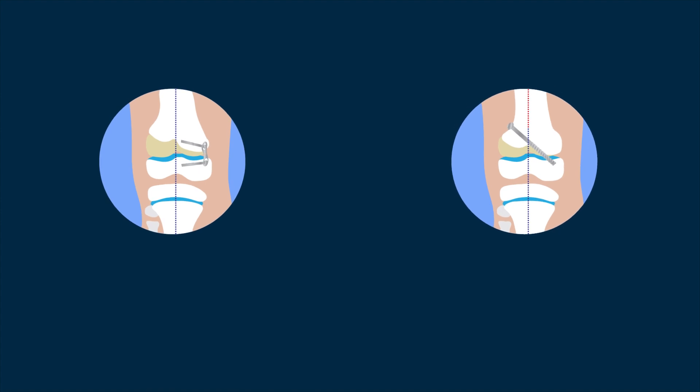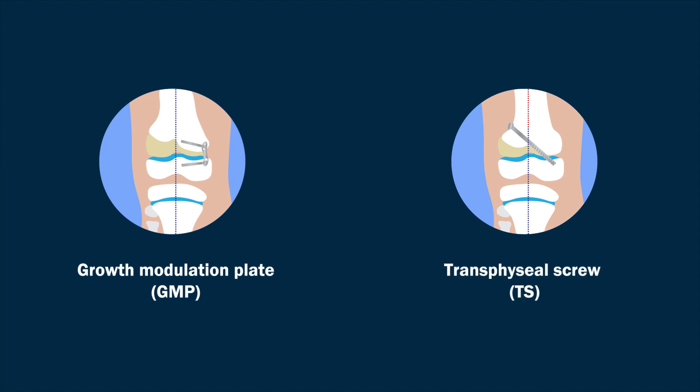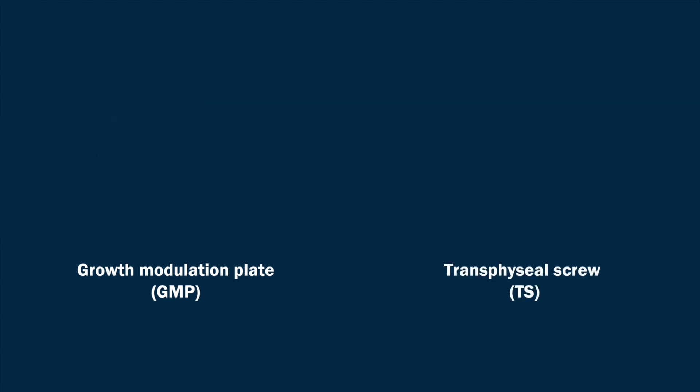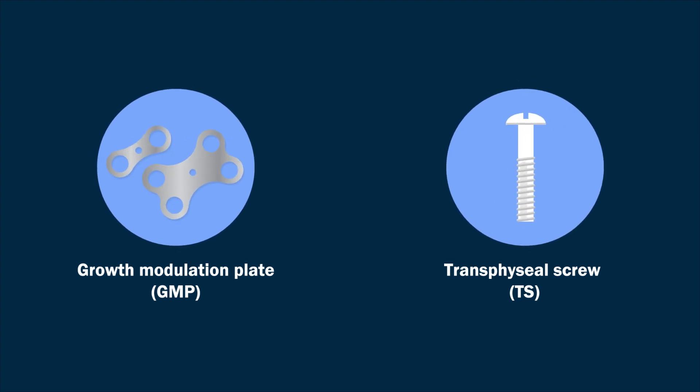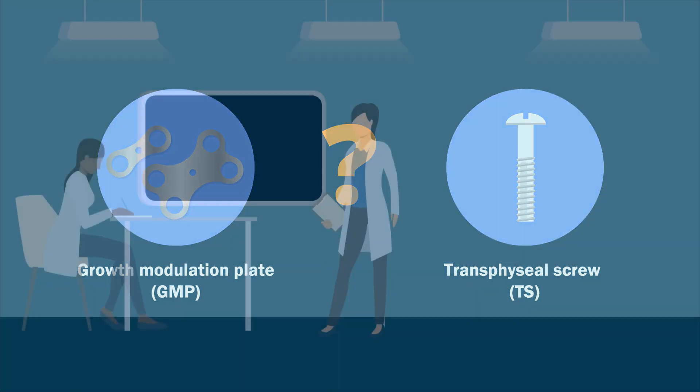Two leading methods of guided growth procedures include the use of either a physial bridging growth modulation plate, or GMP, or a transphysial screw, or TS. However, a consensus on which technique is more effective has not been reached.